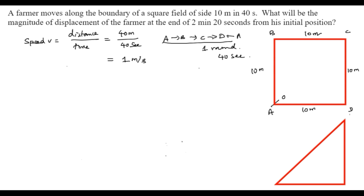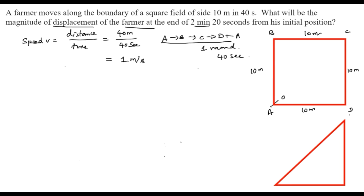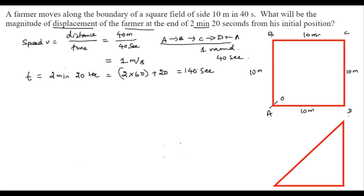We are asked to calculate the magnitude of the displacement of the farmer at the end of 2 minutes and 20 seconds. So t = 2 minutes 20 seconds = 2 × 60 + 20 = 140 seconds.